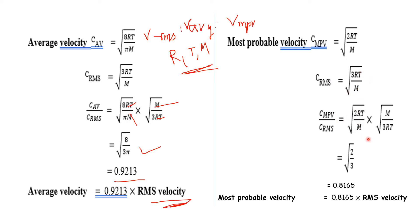We substitute both formulas. The RT and m terms cancel out, leaving the square root of 2 divided by 3, which equals 0.8165. So the most probable velocity is equal to 0.8165 times the root mean square velocity.